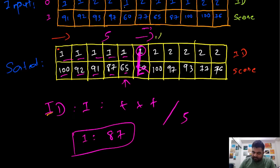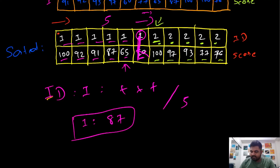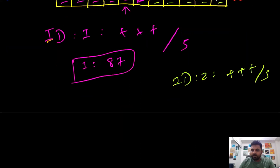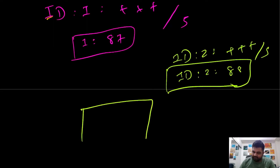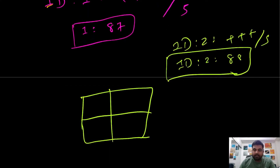We find the next ID: ID number two. For ID number two, we do the same process — iterate over the first five elements and keep doing the sum of their scores. Once we get the sum, we divide by five. So for ID number two, we add all the values, divide by five, and find the average to be 88. Since we have both answers stored, we keep adding these values to a two-dimensional array and simply return it at the end. So this would be [1, 87] and [2, 88], and this would be our answer.